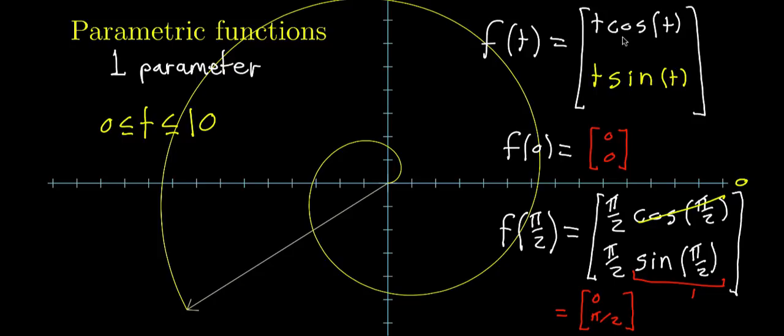And you can maybe think about why this cosine of t, sine of t scaled by the value t itself would give you this spiral. But what it means is that we saw that zero goes here, evidently, it's the case that 10 outputs here.